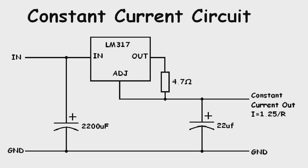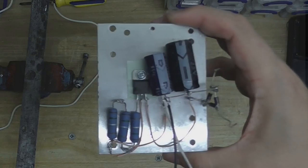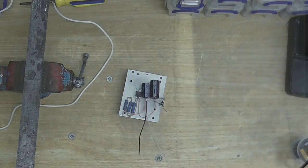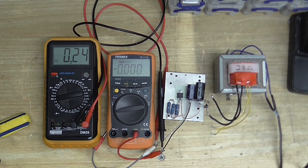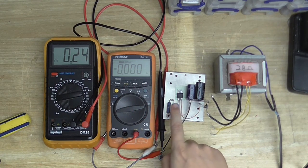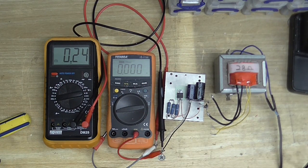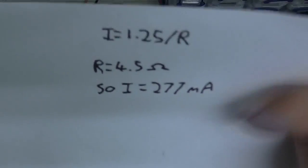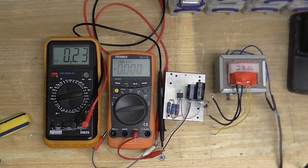So what this does is it adjusts its output voltage depending on the load so that only a certain amount of current flows through that load. Alright, so let's see if this thing works. Now the resistors I've used come to about 4.5 ohms. So according to this little equation here, we should have about 277 milliamps out of the circuit. So let's see what we get.